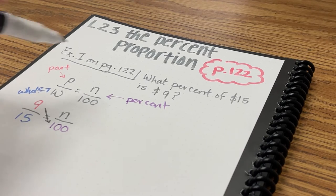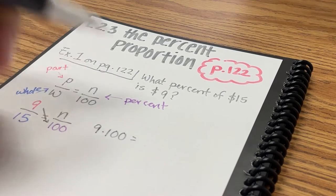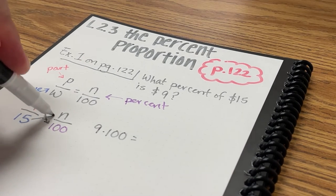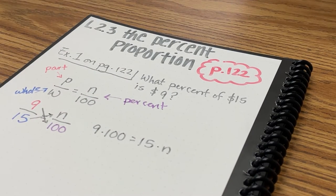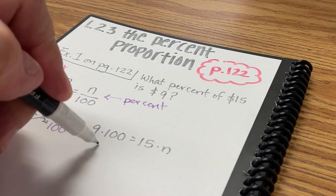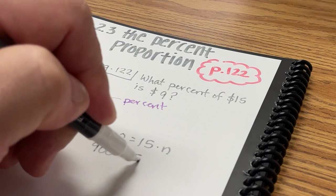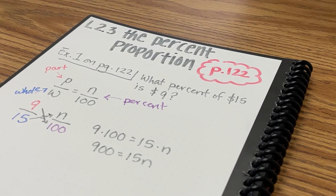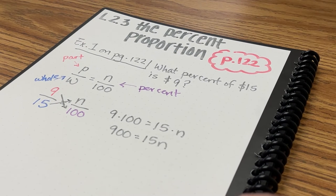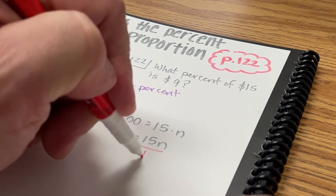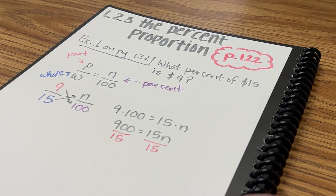So now that I have these two ratios equal to each other, they are a proportion. I can use cross products to solve it. So 9 times 100 is equal to 15 times n. 900 equals 15n. My next step in this problem is to divide both sides of the equation by the coefficient of n, in this case 15.